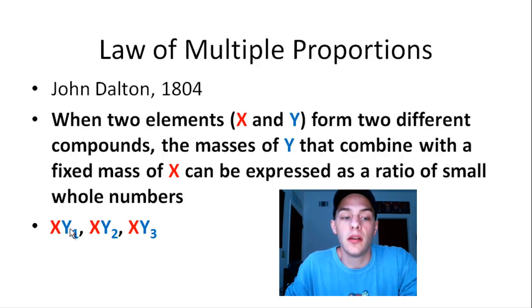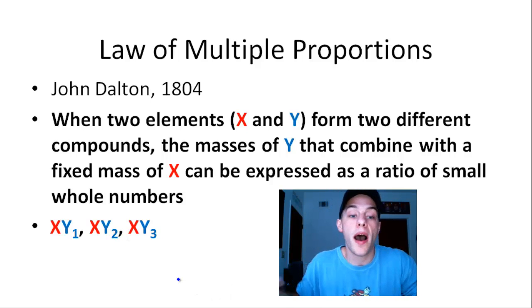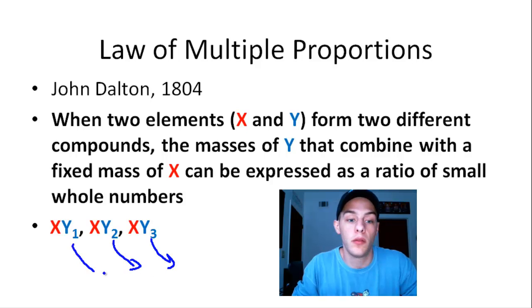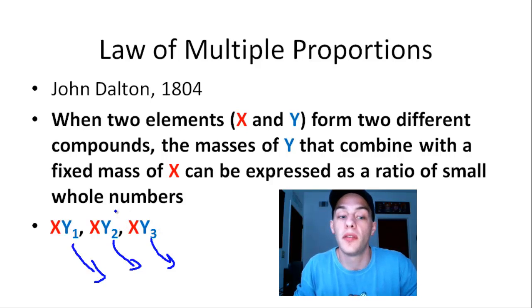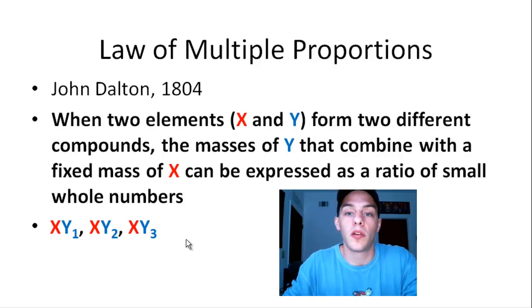Then the ratio of these masses of Y, so the ratio of Y1 to Y2 to Y3, all of these ratios, all of these mass ratios should turn out to be small whole numbers because if all of these elements have the same mass, if all atoms of the same element have the same mass, and you're just multiplying them by a certain number, then that number should be reflected in the mass ratio. So that's basically all that the law of multiple proportions is saying.